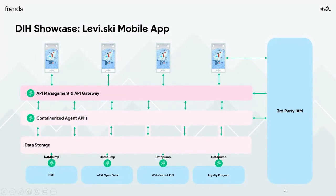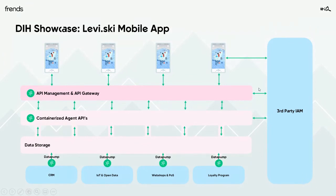There's a bit of logic and intelligence around how we present the temperature for a particular slope coming from the IoT device of the snow gun. We use the digital integration hub as a whole to get all our data from CRM, IoT, open data, web shops, point of sales, and even a loyalty program built from scratch using microservices — all included in the data storage and data pump concept. We offer all needed functionality as open APIs to the mobile application and other consumers, secured using Azure Active Directory.